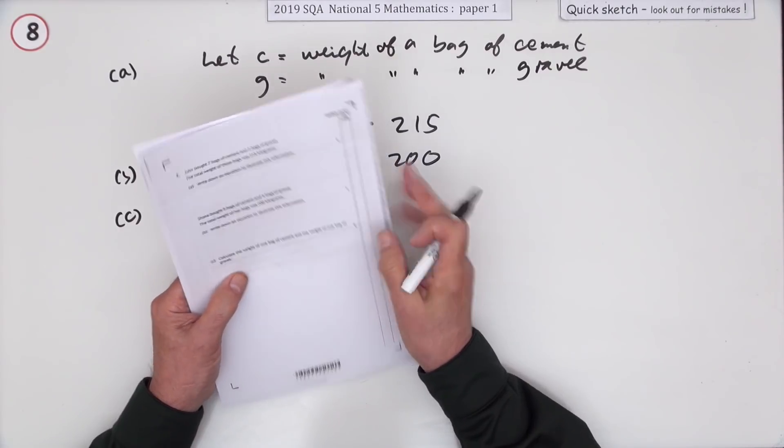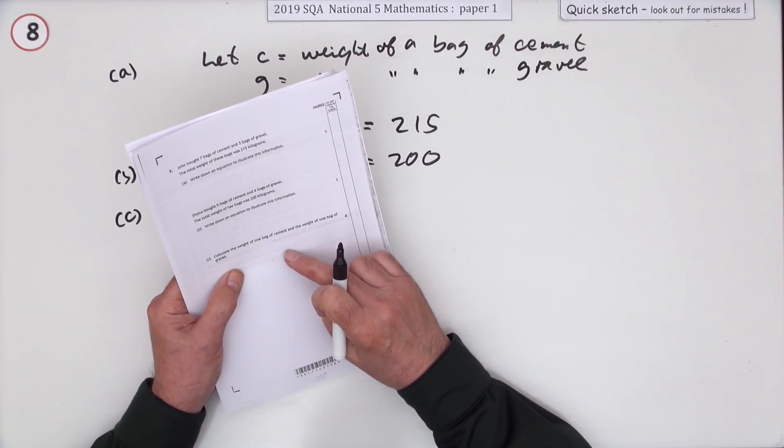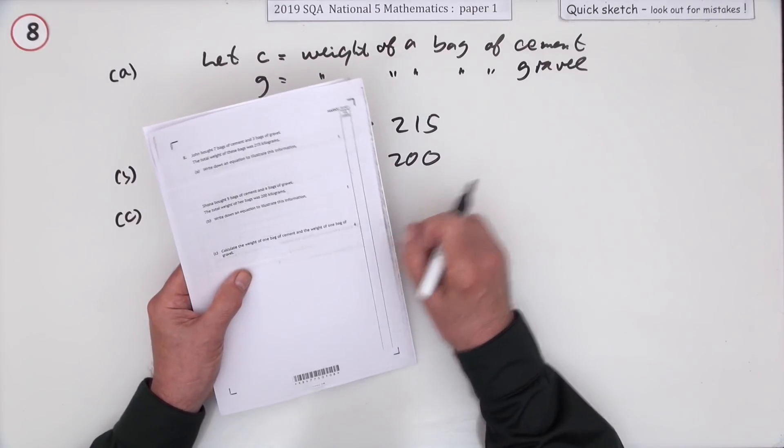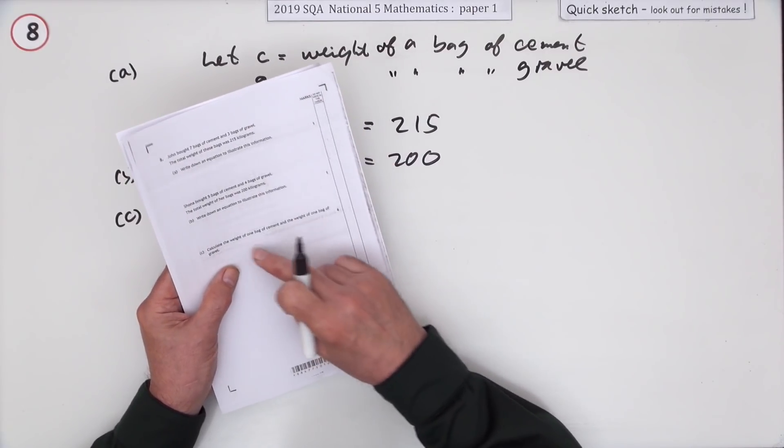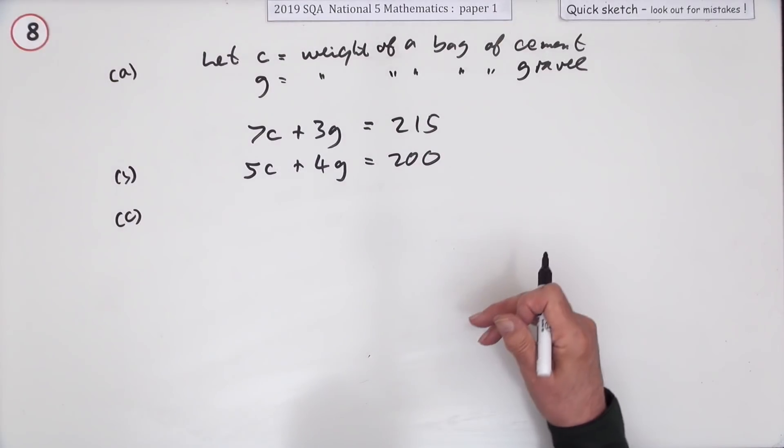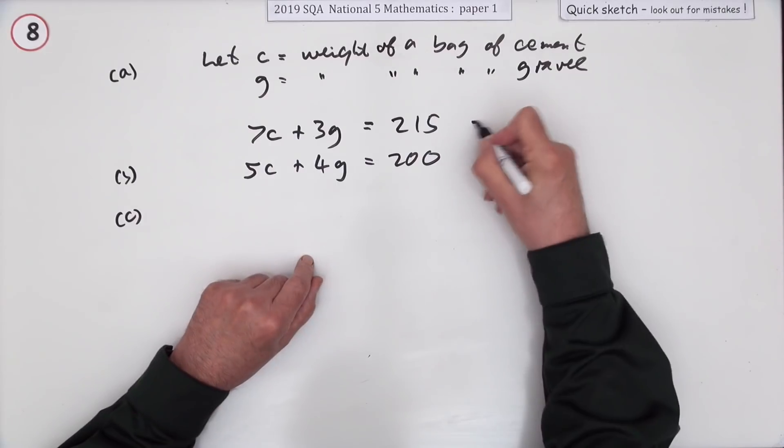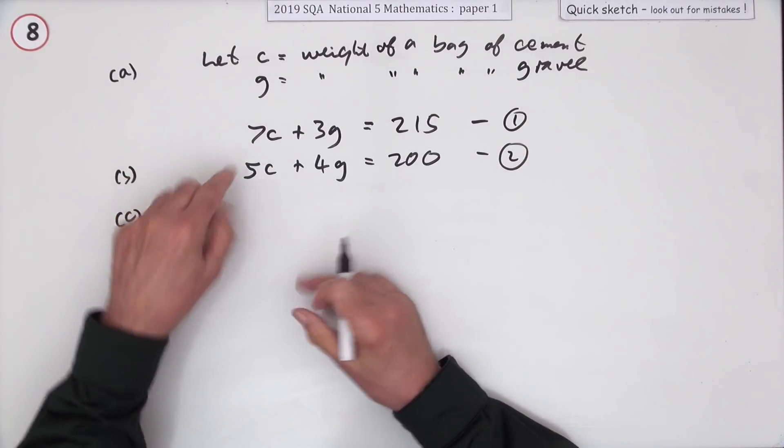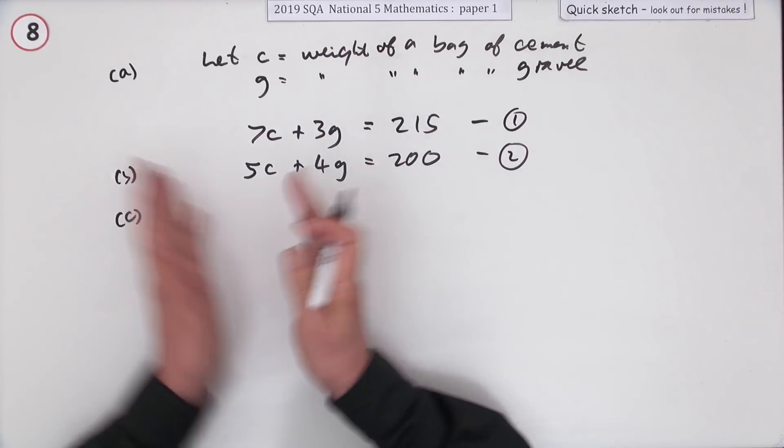Part B, for four marks, calculate the weight of one bag of cement and the weight of one bag of gravel. You've got simultaneous equations and when it's like this it's going to be elimination.